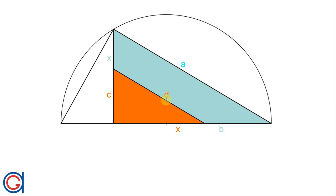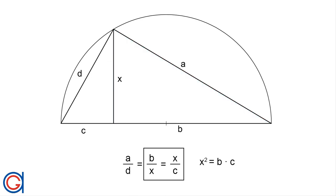So according to Thales theorem, if the angles are the same, then the sides must be proportional. In other words, a divided by d is equal to b divided by x is equal to x divided by c. And from this relationship, we can extrapolate that x squared is equal to b times c by cross multiplying the last two fractions.